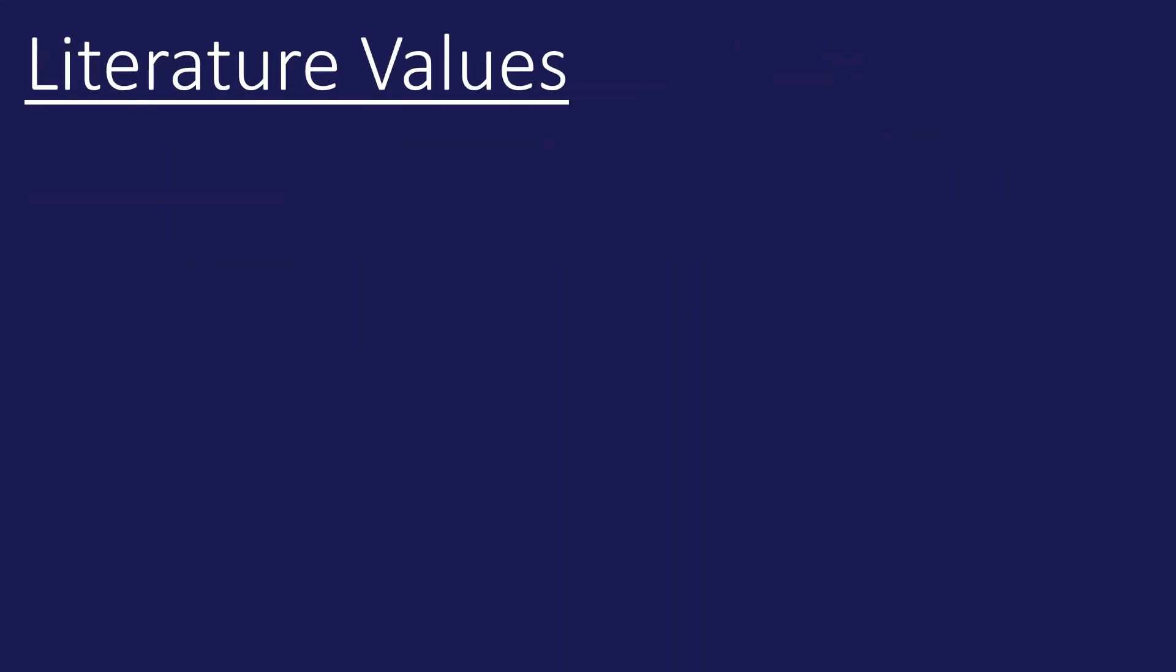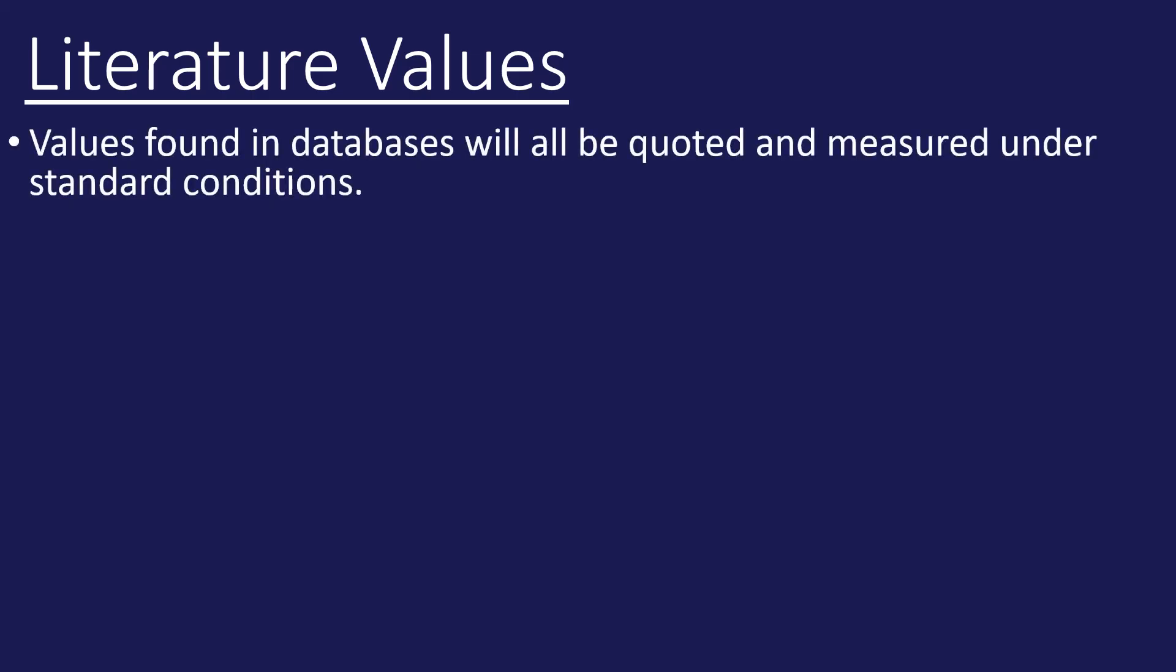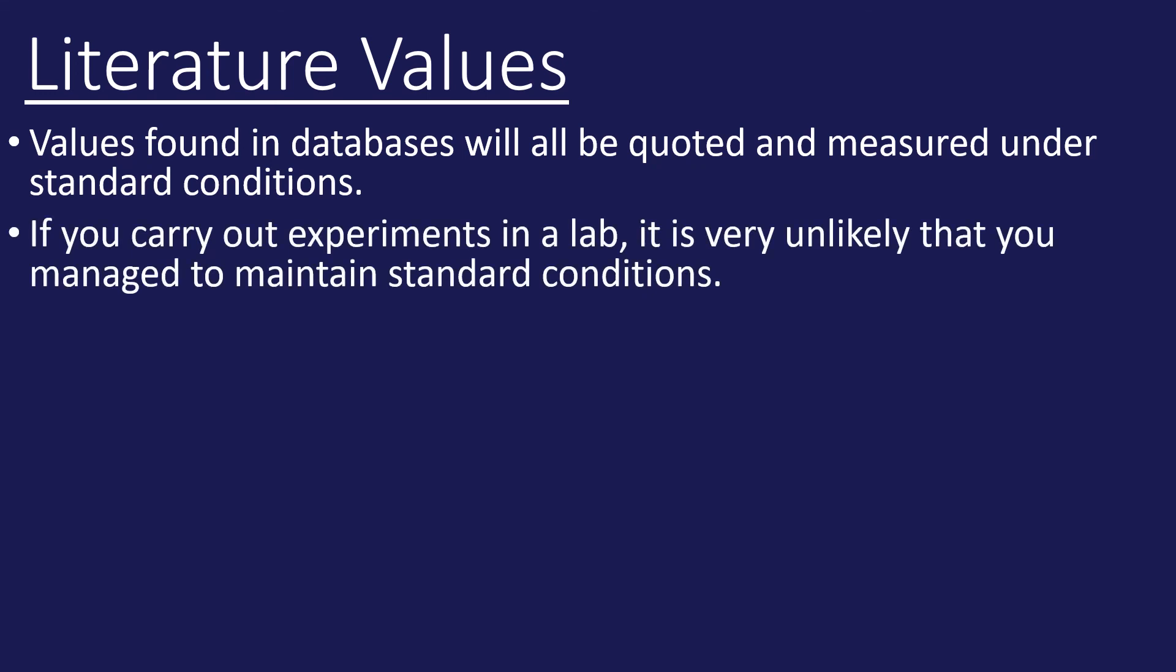Finally, let's look at literature values and what we mean by this. When we use the term literature value, these are the values for enthalpy changes that you would find in shared databases, textbooks, and journals. They will have been carried out under standard conditions: 298 Kelvin, 101 kilopascals, and per mole of substance. The truth is, though, if you were to carry out those in the lab, it's highly unlikely that you would have managed to maintain standard conditions. For example, if you were to burn methane under standard conditions, water is a liquid. However, if you were to actually burn methane in a lab, you are likely to produce water vapor, H2O gas. Therefore, your conditions are not the same as the ones quoted in the book.